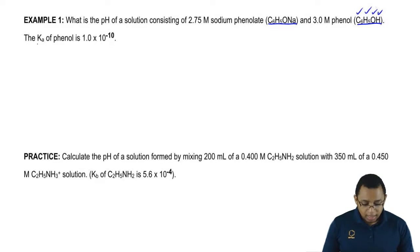We definitely know it's weak because its Ka value is extremely small. If your Ka is less than 1, you're a very weak acid. Sodium phenolate has one less H available, so this is the conjugate base. We have a weak acid and a conjugate base, therefore we have a buffer.